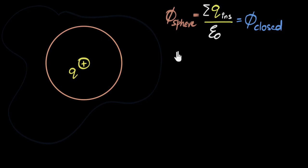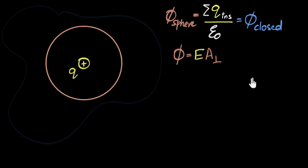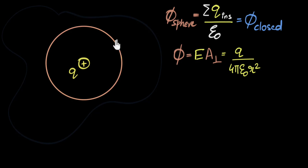Flux through the entire sphere can be calculated as phi equals the electric field times the perpendicular area at that point, integrated over the entire surface. Because the electric field due to a point charge everywhere on the sphere is the same, and the area everywhere is perpendicular, we can just multiply them. The electric field is q divided by four pi epsilon naught r squared, and the perpendicular area is the full area of the sphere, four pi r squared. These cancel, giving flux equals q divided by epsilon naught. If you need a more detailed derivation, check out our previous video on Gauss's Law.